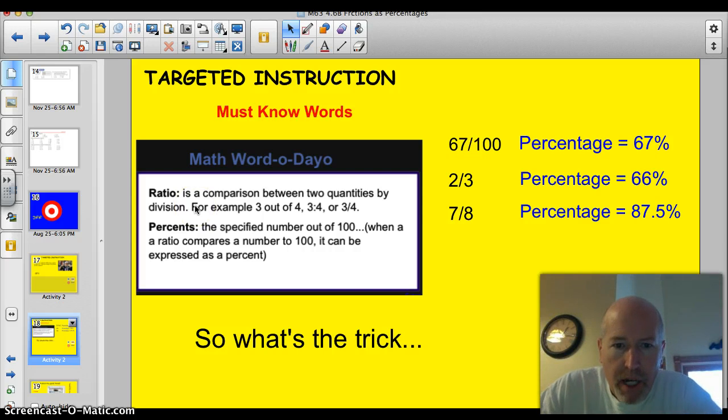Here we go. Must know words. Ratio, again, a comparison between two quantities by division. Percentages, the specified number out of 100. When a ratio compares to 100, it can be expressed as a percent. Why do I bring up ratio? Well, we just talked about this one last lesson. You remember that ratios can be expressed as a fraction or in fraction notation. So all we're doing here is we're just strictly looking at the fraction notation. So that's why it's very similar to last lesson.